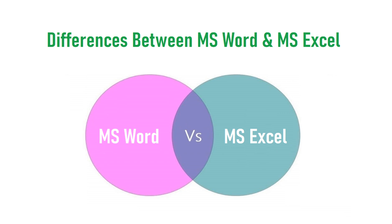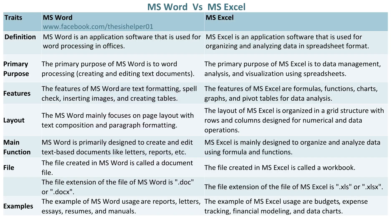Differences between MS Word and MS Excel. MS Word is an application software that is used for word processing in offices. Whereas, MS Excel is an application software that is used for organizing and analyzing data in spreadsheet format.